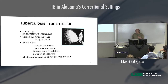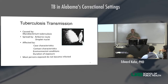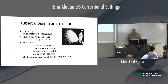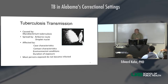Transmission is affected by case characteristics. Some people have what we call cavities — holes in the lung — and those are highly infectious. There's a large number of TB organisms in the cavities, and when people cough, they get into the air in pretty high concentrations and can be highly infectious.